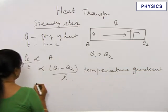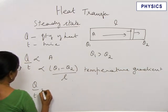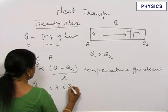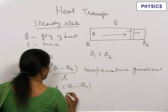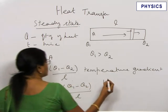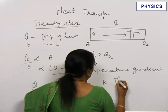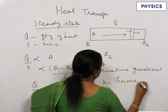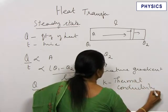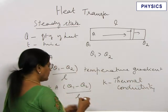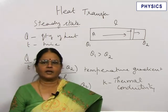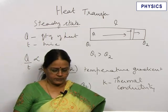Then we can write Q by T equal to K A theta 1 minus theta 2 by L, where this proportionality constant K is called thermal conductivity of the material or coefficient of thermal conduction. So K is known as the thermal conductivity of the material.